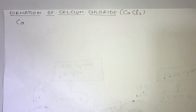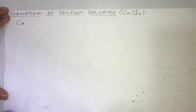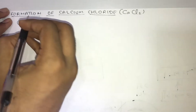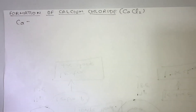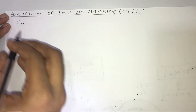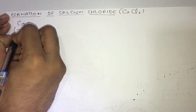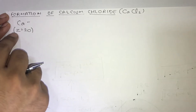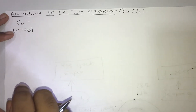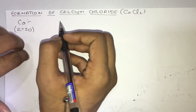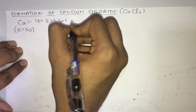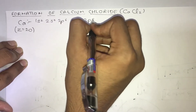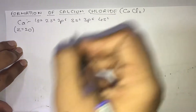Let us understand what happens during the formation of calcium chloride. For calcium chloride you require a calcium atom. To write the electronic configuration of calcium, you must know its atomic number. The atomic number of calcium is Z = 20. Its electronic configuration becomes 1s2 2s2 2p6 3s2 3p6 4s2.